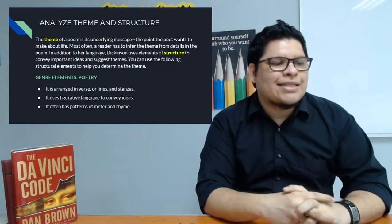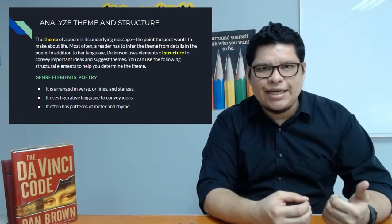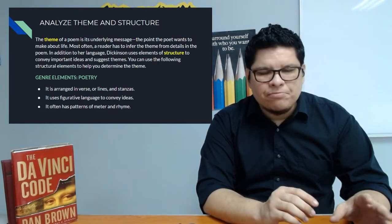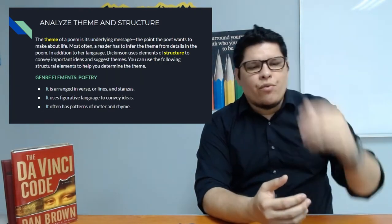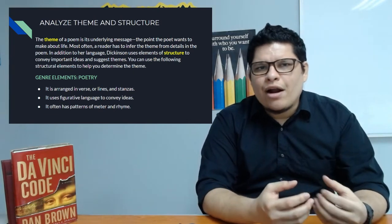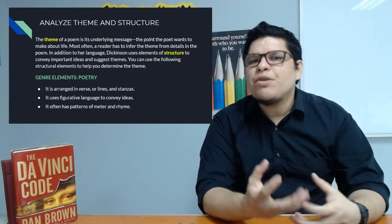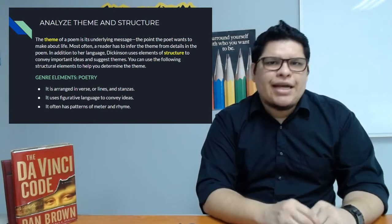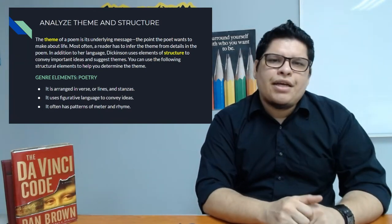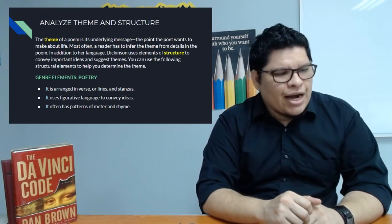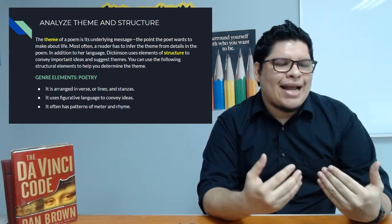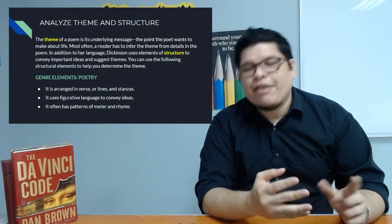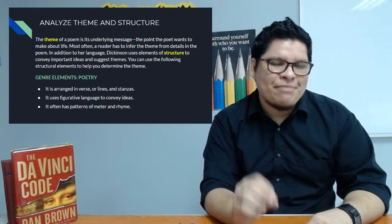The second element poetry has is that it uses figurative language to convey ideas. The ideas are not literal, the information is not quite there explicit. We have to read, we have to understand what are the images that the author is trying to communicate through different words, representations, through metaphors, etc. The third element in poetry is that it has patterns of meter and rhyme, which is what I was just explaining.